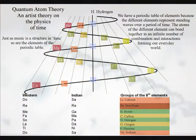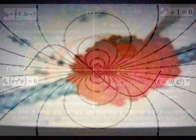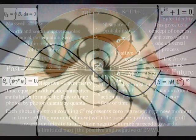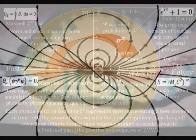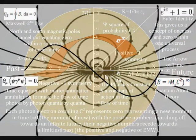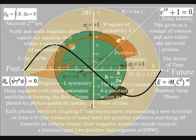The different elements represent standing waves over a period of time. The atoms of the different elements can bond together in an infinite number of combinations and interactions, forming our everyday world. This is not a static process but a dynamic one, with light waves of electromagnetic radiation continuously interacting with the atoms — the future coming into existence with each new photon-electron coupling.